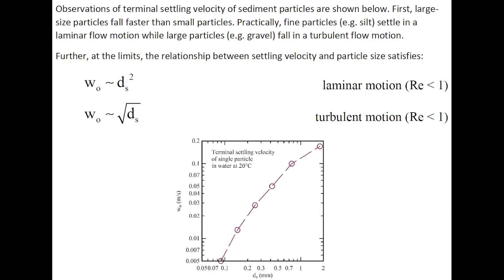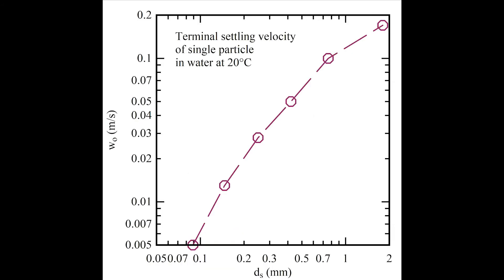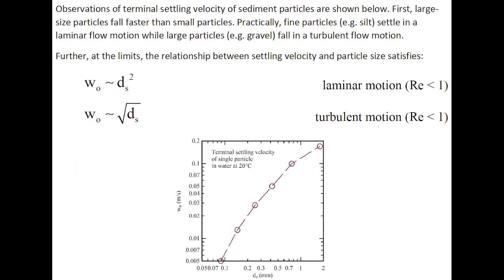Observations of terminal settling velocity of sediment particles are shown on this graph. Large-sized particles fall faster than small particles. Fine particles, for example silt, tend to settle near laminar flow motion, while large particles, such as gravel, fall in turbulent flow motion.